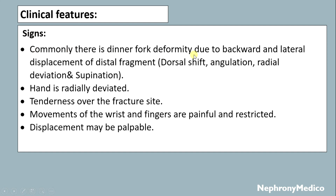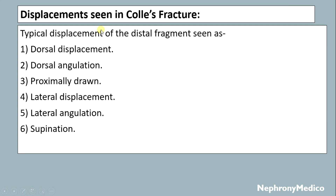Signs include the classic dinner fork deformity due to backward and lateral displacement of the distal fragment. There is dorsal shift, angulation, radial deviation, and supination. The hand is radially deviated, tenderness is present over the fracture site, and movements of the wrist and fingers are painful and restricted. Displacement may be palpable.